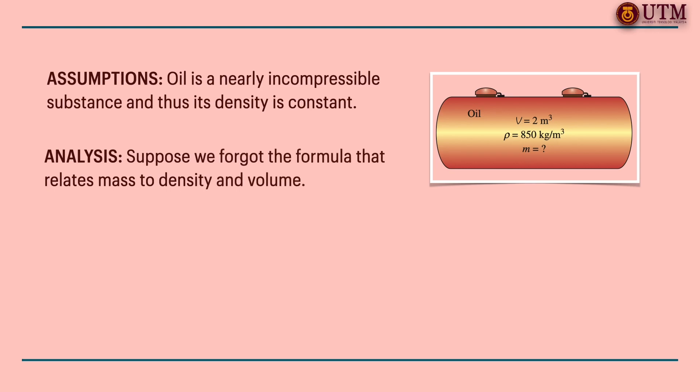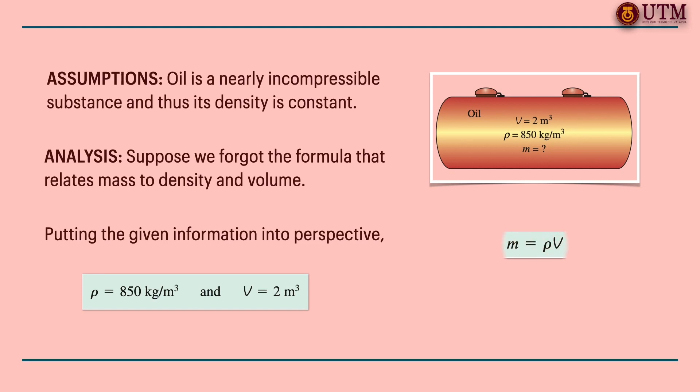Let's say we forgot the formula that relates mass to density and volume. However, we know that mass has the unit of kilograms. That is, whatever calculations we do, we should end up with the unit of kilograms. By putting the given information into perspective, we have density and volume. It is obvious that we can eliminate cubic meter and end up with kilogram by multiplying these two quantities. Therefore, the formula we are looking for should be density times volume. Thus, mass is equal to 1700 kilogram.